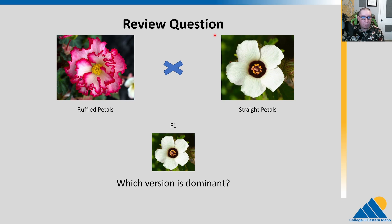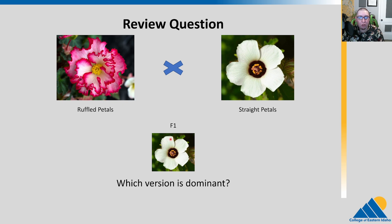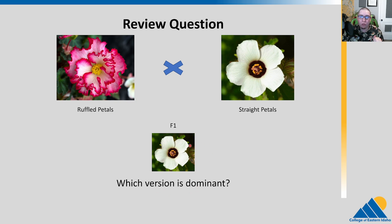Let's review before we finish up this chapter. I have two flowers of the same species. I want to understand the genetics behind petal shape. I have a true breeding parent that has ruffled petals and a true breeding parent that has straight petals. I cross these and my F1 shows the straight petal form. Which version of this trait is dominant? Go ahead and pause the video and think about that. Hopefully this wasn't a challenge — you remember that the F1 version always shows the dominant form. So the straight petals is the dominant form because it showed up in the F1.